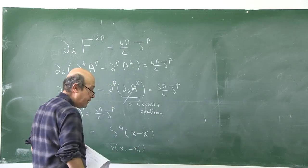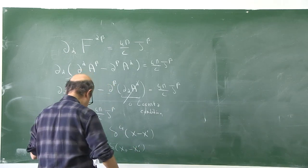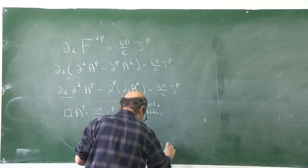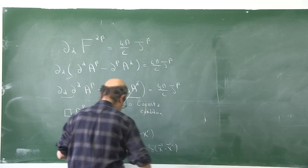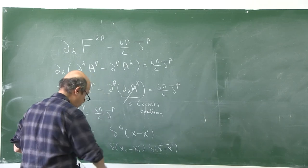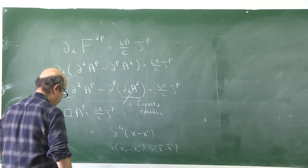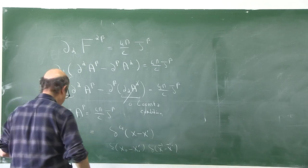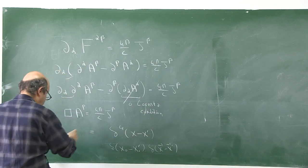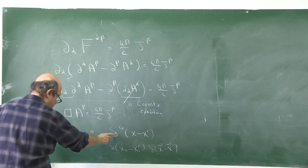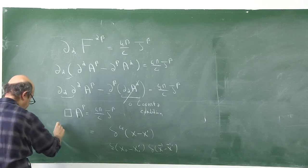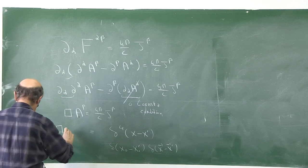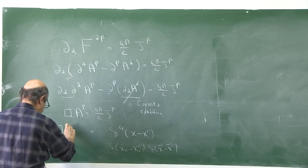The four-dimensional delta function is δ(x⁰ − x'⁰) for the time coordinate and δ³(x − x') for the space coordinates. If the source is the delta function, then the solution is the Green's function D(x, x'), where x and x' are four-dimensional spacetime coordinates and the four-dimensional Laplacian acts on x.